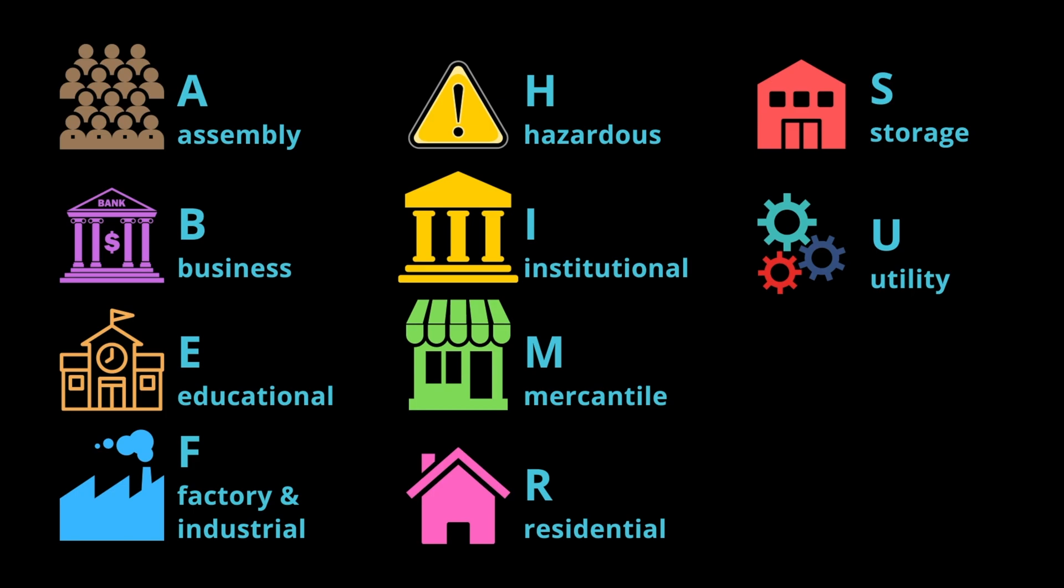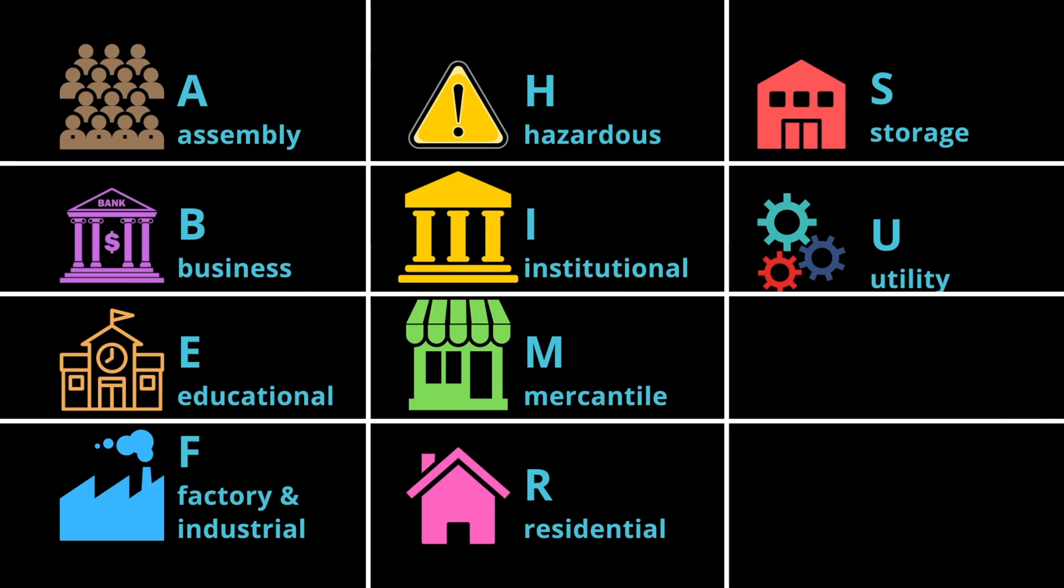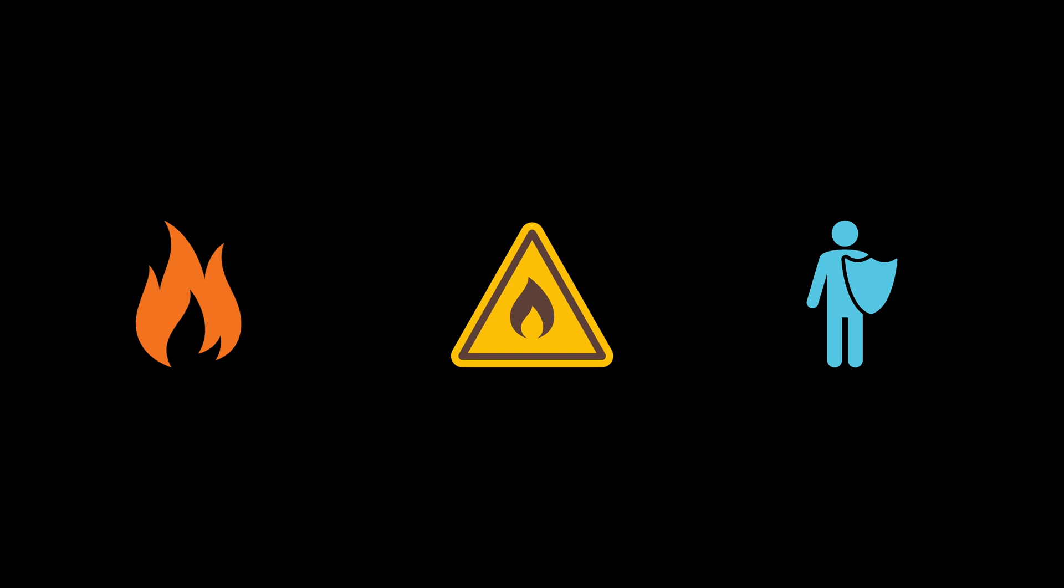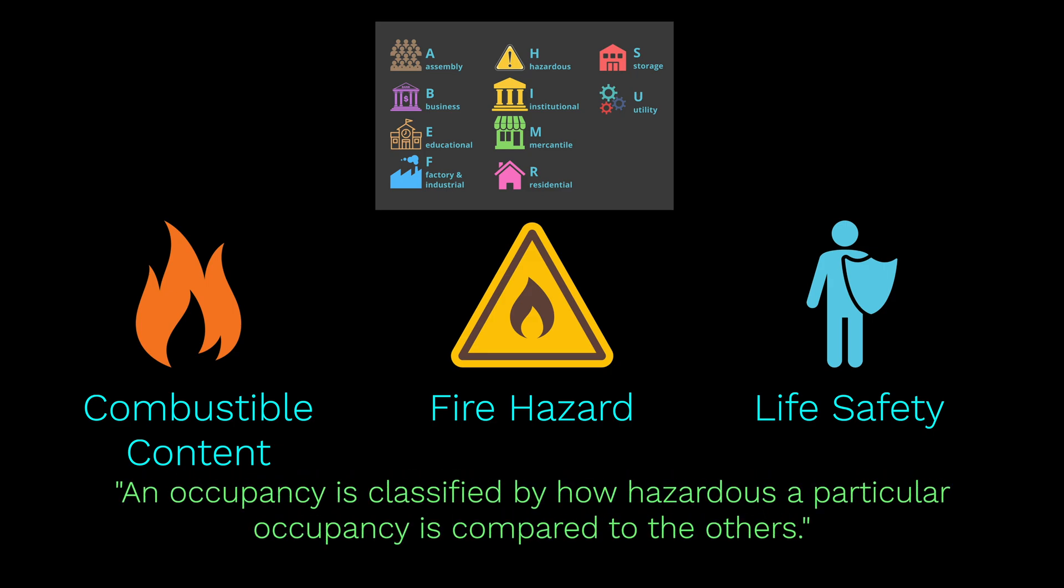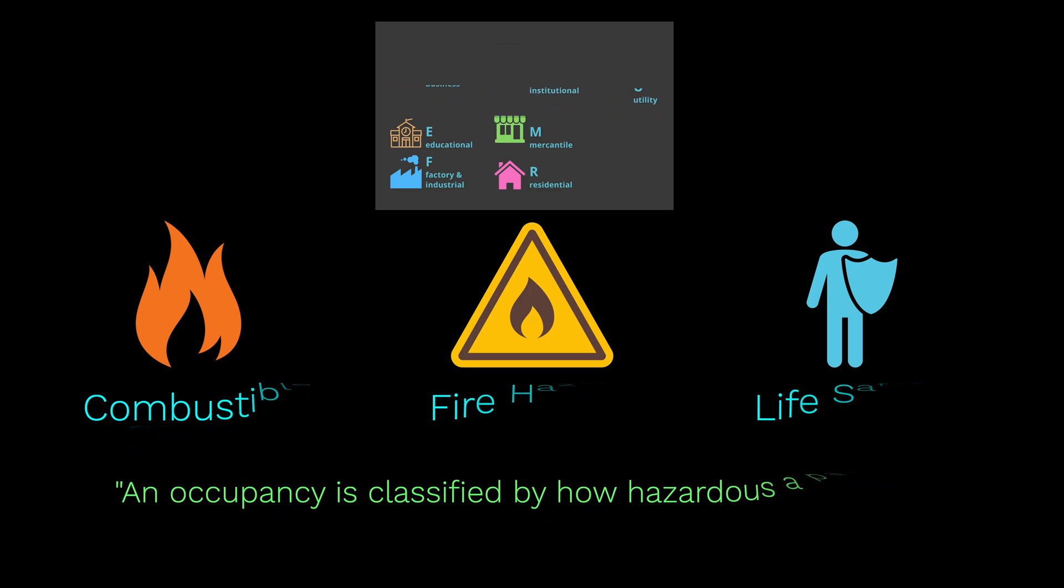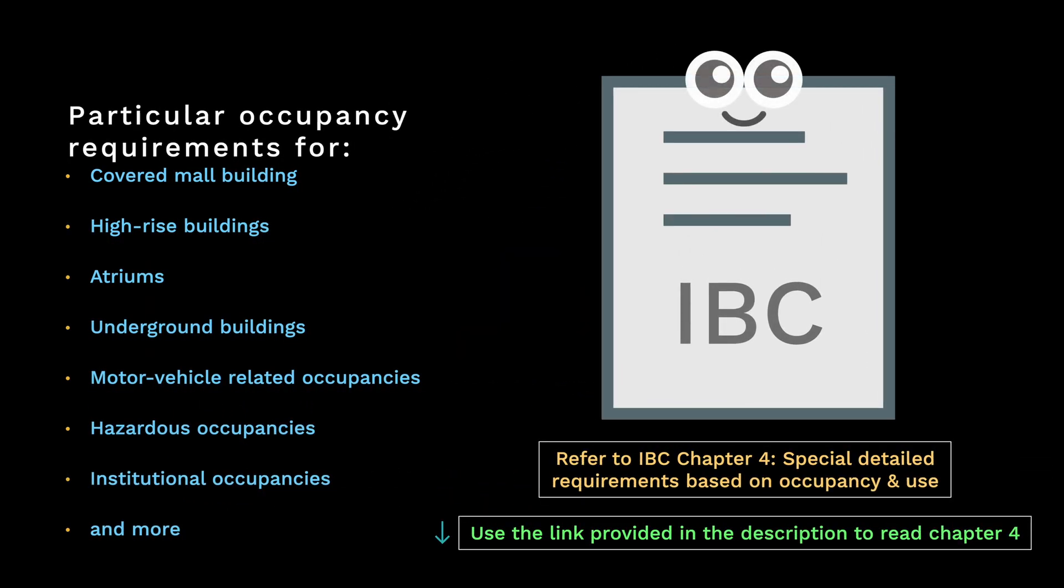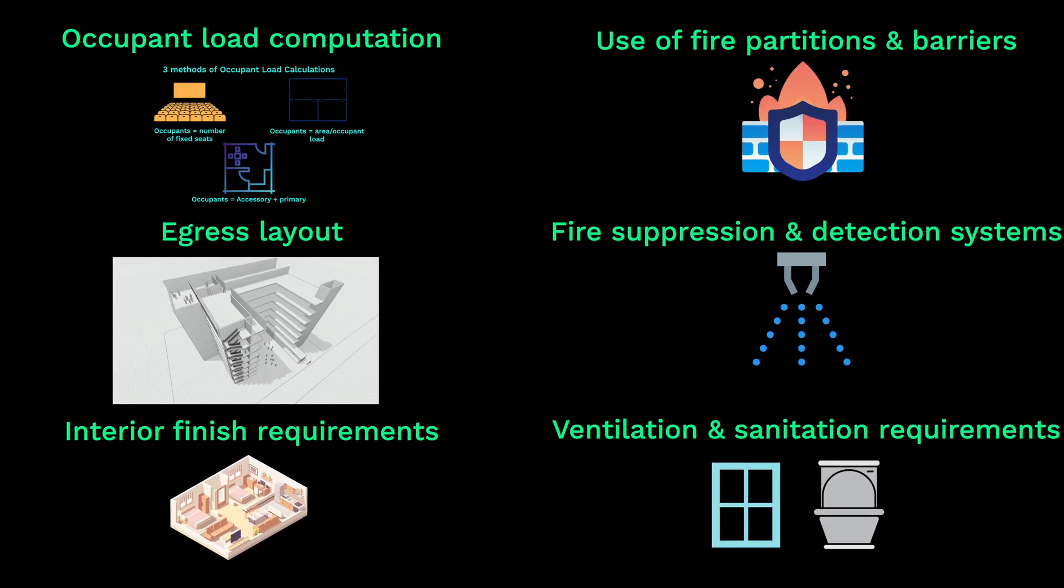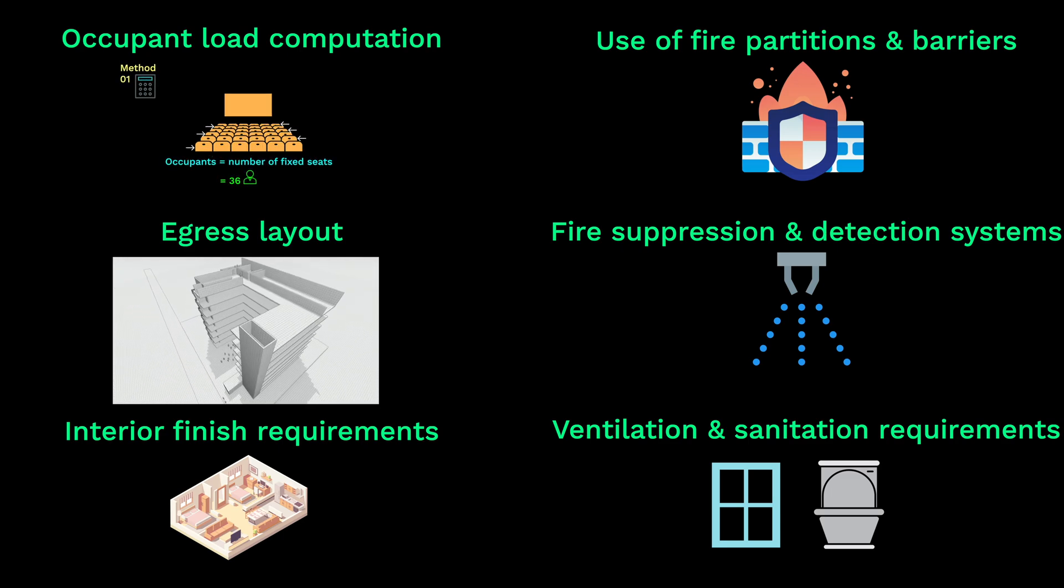If you're a client or an architecture student, you might wonder why occupancies were divided into different groups. What basis did the writers of the building code use for this action? The occupancies were divided because of these three main reasons: combustible content, fire hazard, and life safety factors. In essence, occupancies are classified by how hazardous a particular occupancy group is compared to the others. There are also particular requirements for these occupancies. You'll find these requirements in chapter four of the International Building Code. By determining the occupancy first, you'll perform the next steps to comply with the building code.